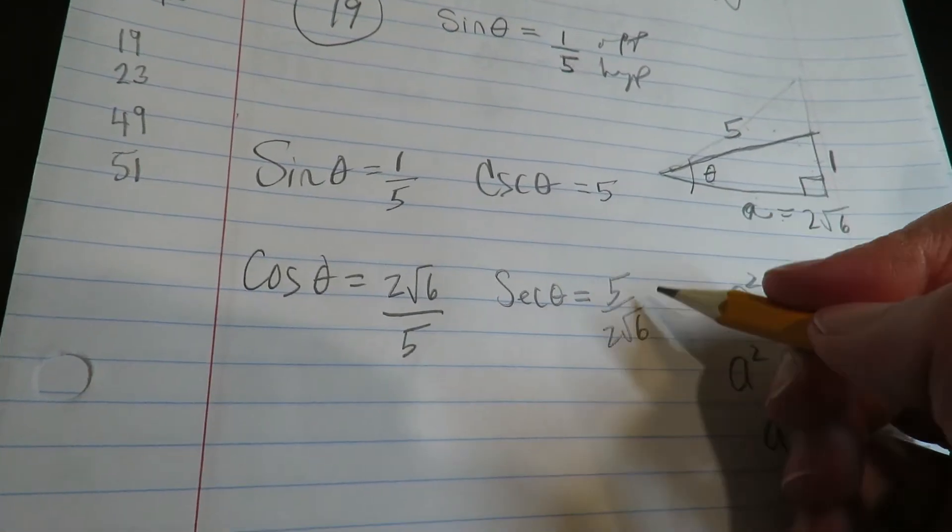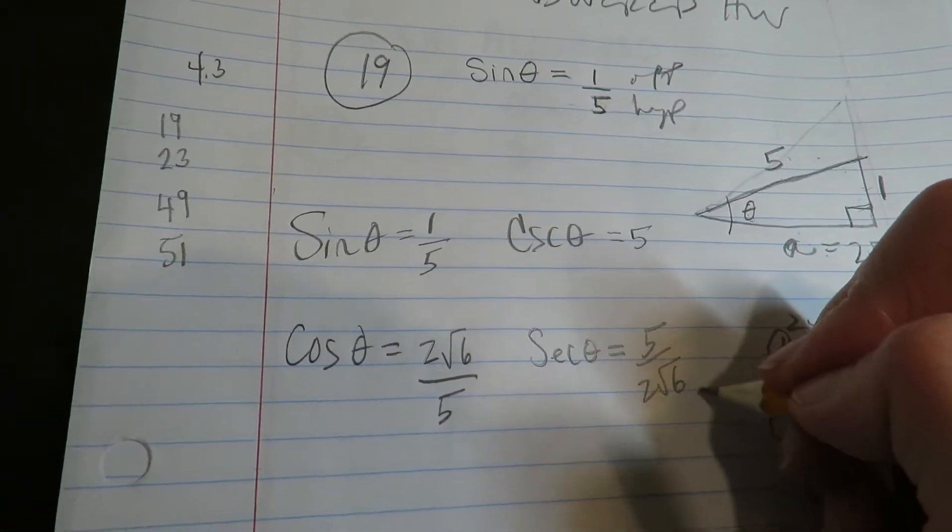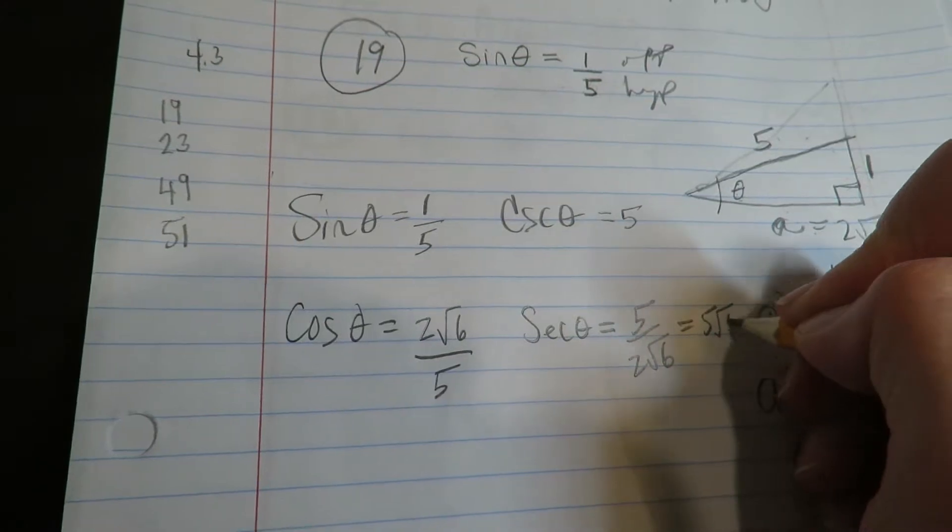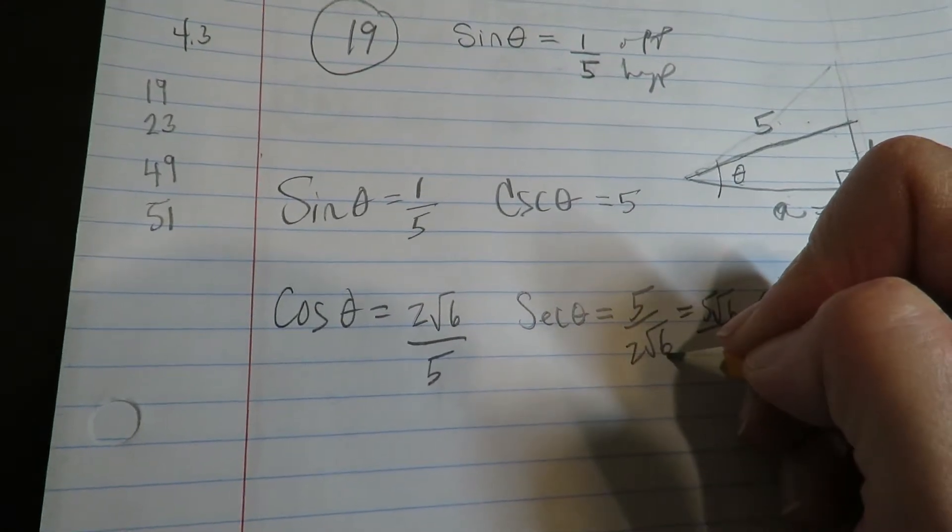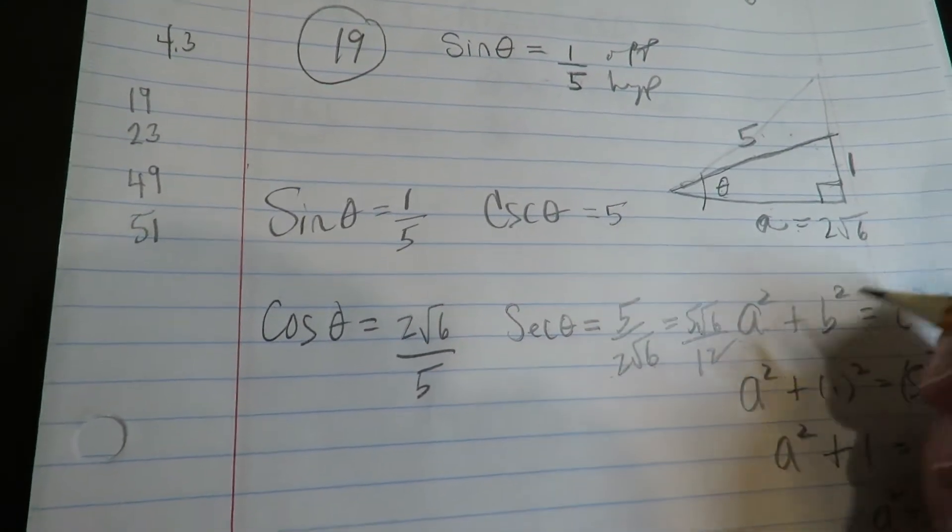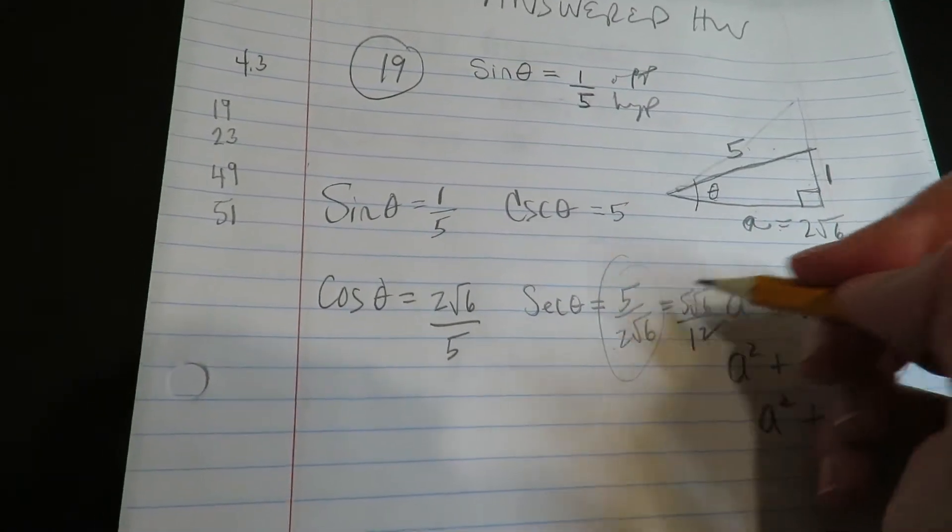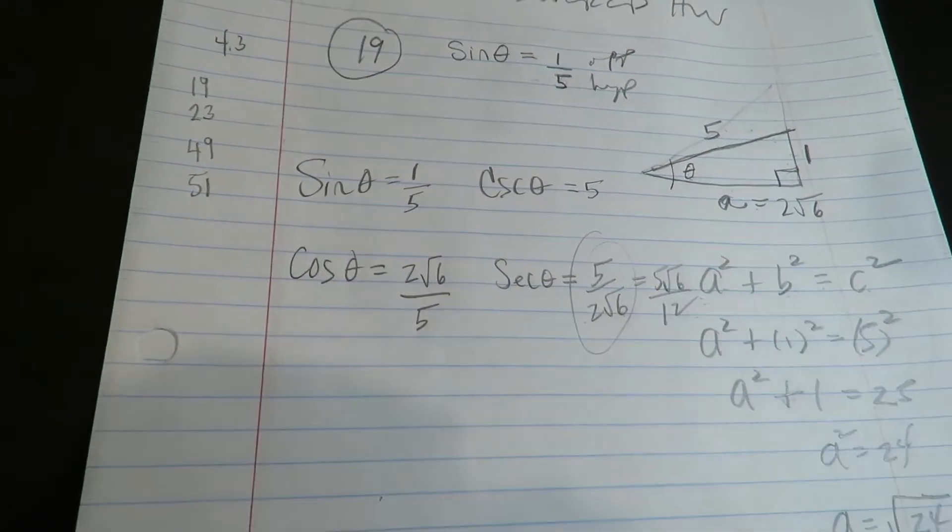Again, I don't care if you rationalize. If you did rationalize, you multiply it up and down by radical 6. And if you multiply it up and down by radical 6, this would become a 12. Okay, I'm really good with that. If you want to rationalize, I'm good with that also.